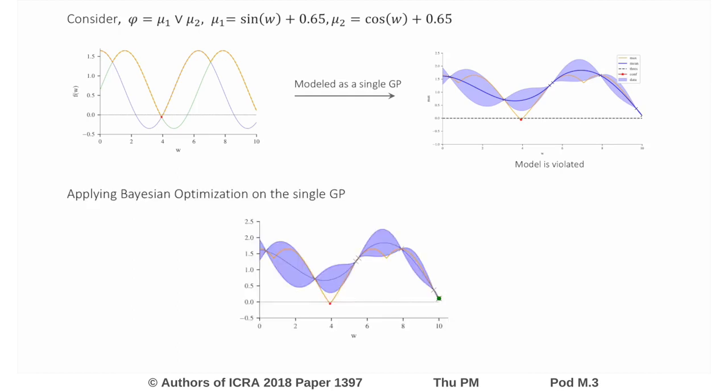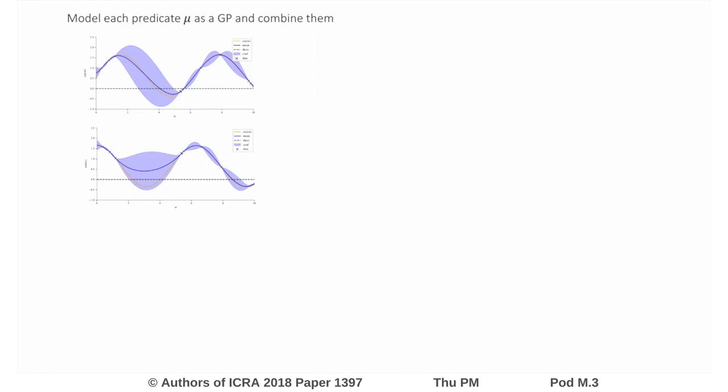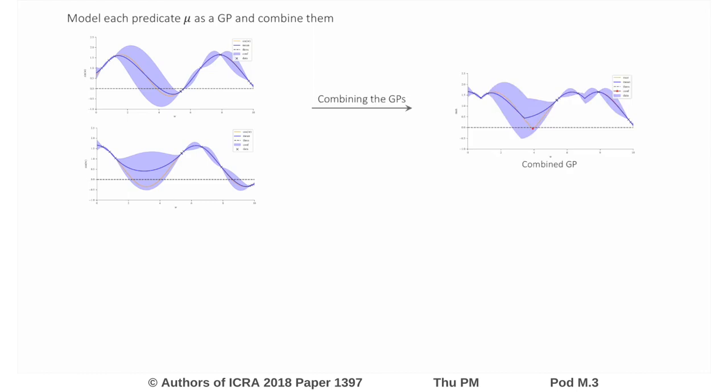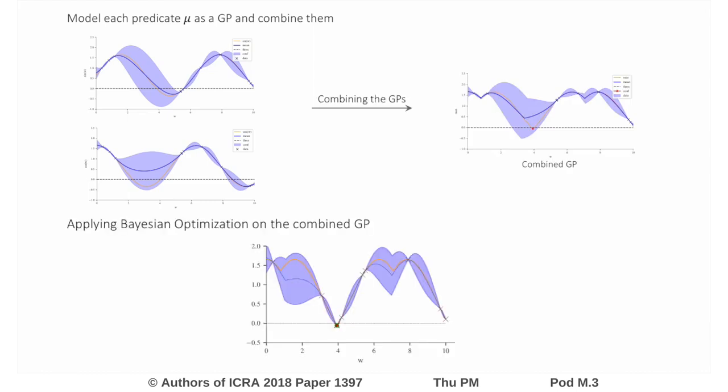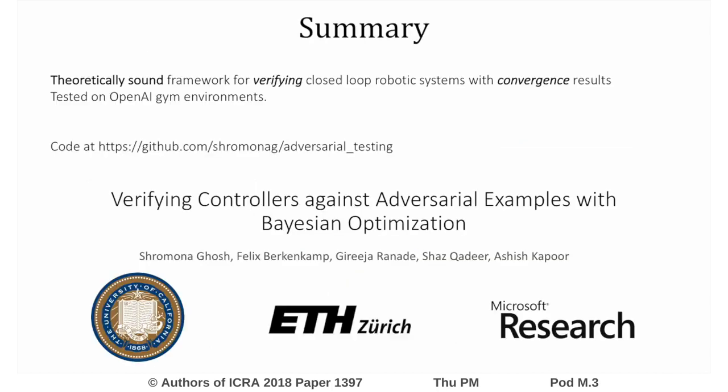Using this model for verification would lead us to converge to the green dot and falsely conclude that the system is verified. In our framework, we model the predicates separately with their own GP and combine them using phi to obtain the graph on the right. Applying Bayesian optimization on the combined GP converges to the green dot which coincides with the red star, which is a potential counterexample to the verification.